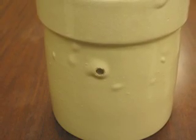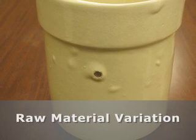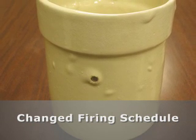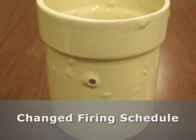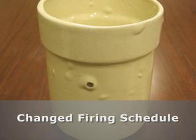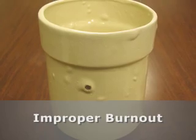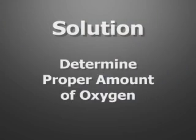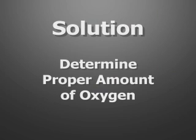Periodically we're going to run into problems with blistering or pinholes. These problems can be associated with variation in raw materials or a changed firing schedule — for instance, when sales goals require firing a little faster. Improper burnout can also be a cause. The solution is to run DTA or TGA to determine what is coming off, how much, and when. We can then determine the proper amount of oxygen required to properly fire the product.